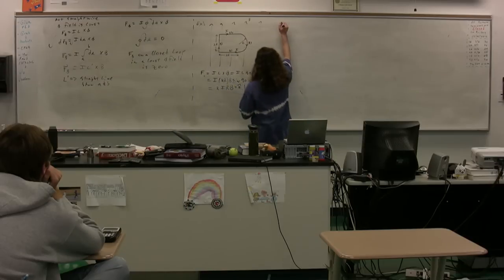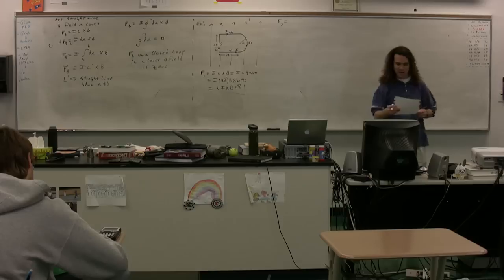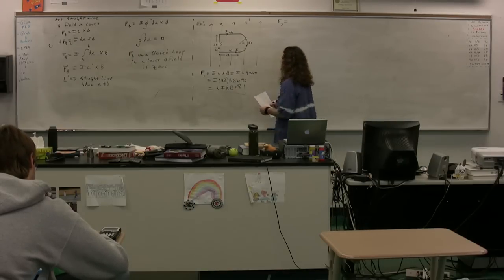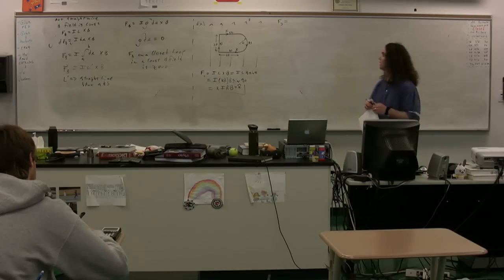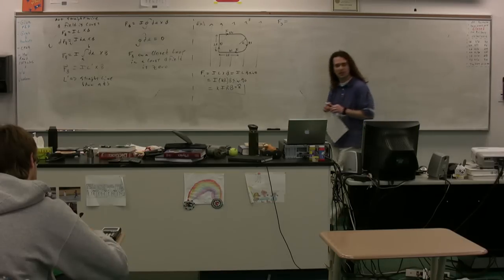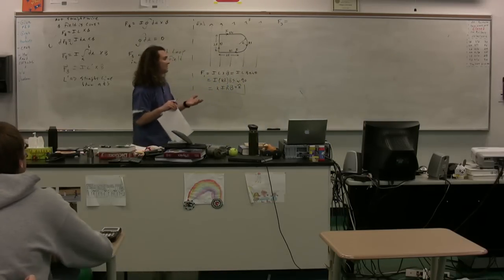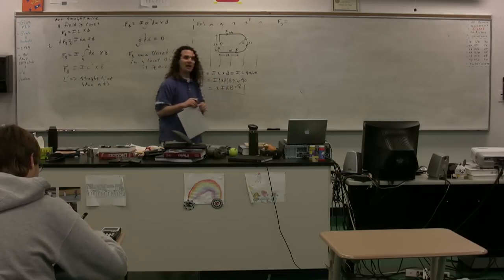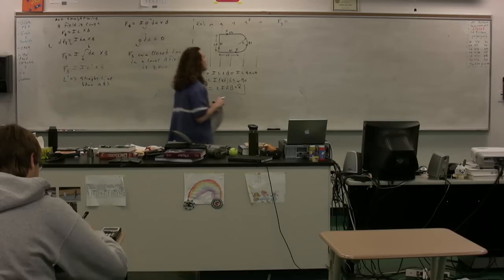The force on wire 3 next. Again, we have I L cross B. What's changed from wire 1 to wire 3? Current direction is left. Anything else? No. If you look, it's got the same length, everything is the same angle. The only difference is the current direction, so it's going to change the direction of the force. So we again have 2 I R B.